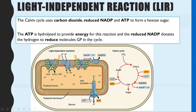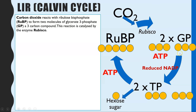Let's have a look at the whole cycle. I'm going to start at the top where carbon dioxide is entering the cycle. Carbon dioxide, which would have originated from the atmosphere and diffused in through stomata in the leaves, reacts with RuBP — ribulose bisphosphate — though for the exam RuBP is fine. This reaction requires the enzyme rubisco to catalyze it and lower the activation energy, resulting in two molecules of GP, or glycerate-3-phosphate.